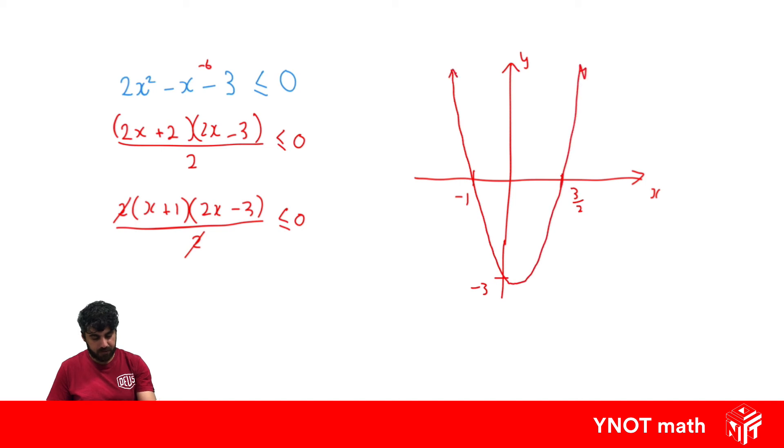We're going to get something like this, and it's concave up because the x squared term is positive. This time it's saying where is the parabola less than or equal to 0, which means where is it below the x-axis.